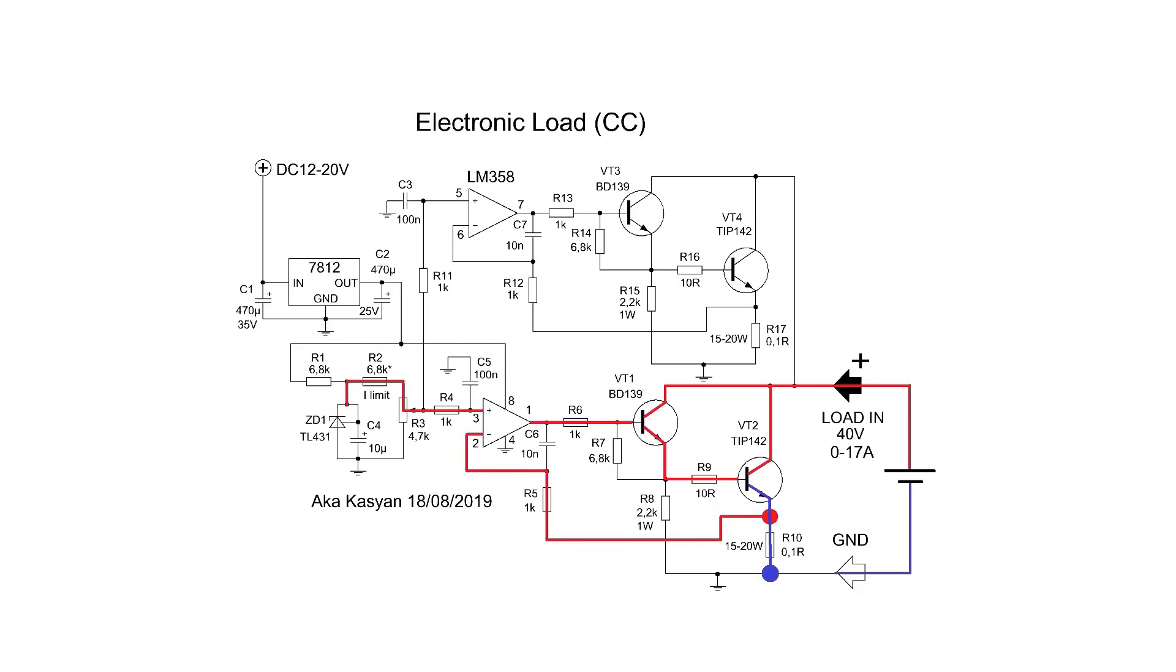As it opens, the resistance of its transition decreases. Consequently, the current in the circuit increases, and vice versa. The principle is very simple. The exact same thing happens with the second transistor.